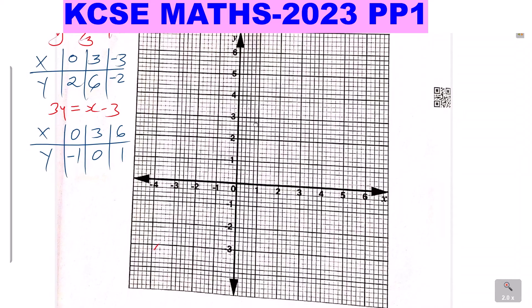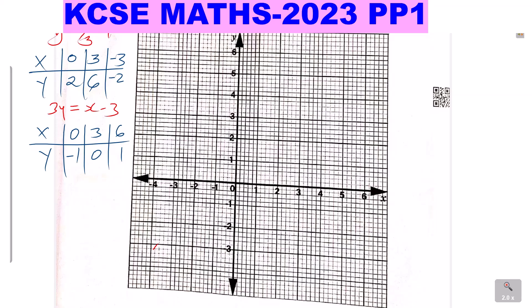So the first line, y is equal to 4/3x plus 2. Let's plot 0, 2. 0, 2 is here. Then 3, 6. 3, 6 is here. Then negative 3, negative 2. Negative 3, negative 2 is here. So once you've done that, join those points using a straight line. Ensure that your line is passing through all the three points.